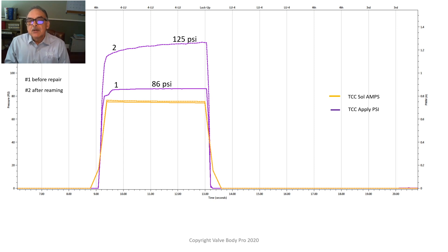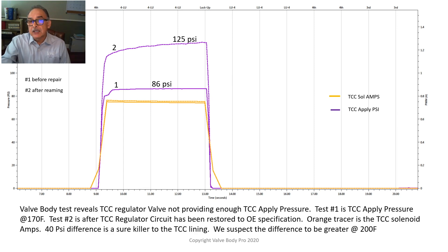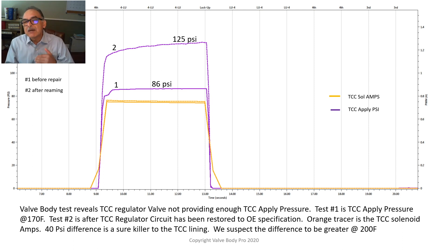What does this mean? That's over 4,000 pounds of applied force being lost in the torque converter. We tested this at about 107 degrees Fahrenheit, but if this unit went up to 200 degrees — which is normal — we figured that loss would probably be even more.